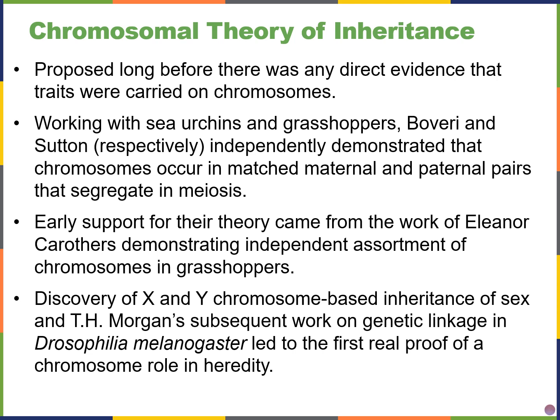Going back to the chromosomal theory of inheritance, just like Gregor Mendel's findings, this theory was proposed before there was direct evidence that traits were carried on chromosomes through genes. Bovary and Sutton worked on sea urchins and grasshoppers and found that chromosomes occurred in matched maternal and paternal pairs, just as Gregor Mendel found, and these segregated in meiosis to create haploid gametes. Eleanor Carruthers also demonstrated independent assortment in chromosomes using grasshoppers. Looking at sex-linked traits, it was Thomas Hunt Morgan's work on fruit flies — drosophila — that showed genes can be specifically linked to certain sex chromosomes.